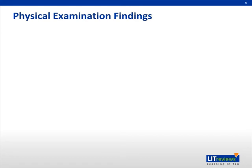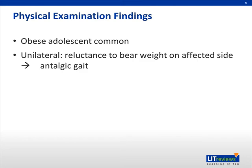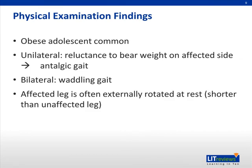Physical exam findings include the following. The children most commonly afflicted with SCFE are obese adolescent males, although it does occur in non-obese patients as well. SCFE is usually unilateral and presents as a patient with a limp and inability to bear weight on the affected side. In bilateral presentation, the patient demonstrates a waddling gait, as it is difficult to bear weight on either leg. In the supine position, or when the patient is sitting, the examiner will find the affected leg flexed at the knee and held in an externally rotated position to minimize pain.